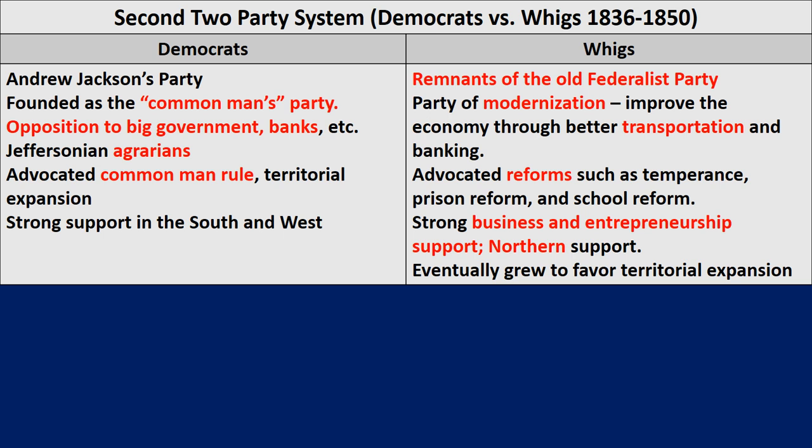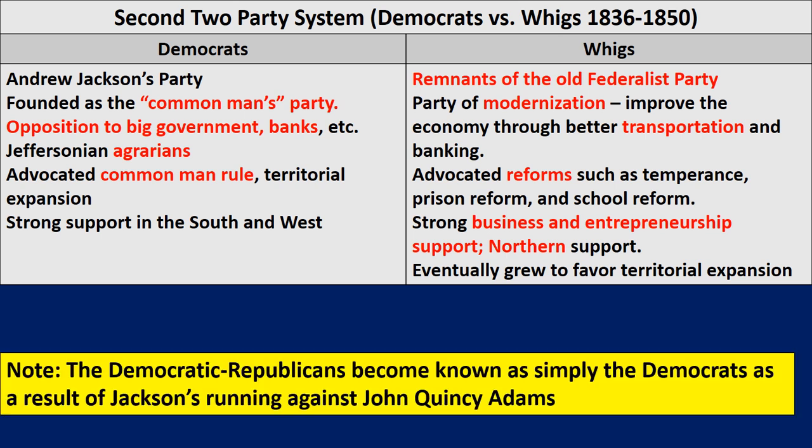The Whig Party was the party of modernization — improve the economy through better banking and better transportation, build canals and roads, advocate reforms such as temperance, prison reform, and school reform. There was a very big partnership with businesses and industry and strong entrepreneurship, with a lot of Northern support. They would eventually grow, as we get closer to the 1850s, to favor territorial expansion as well.